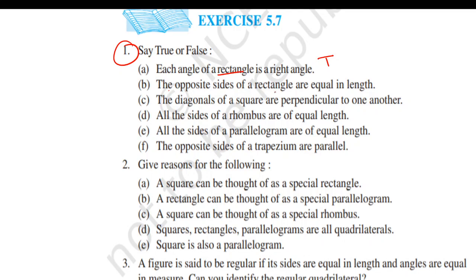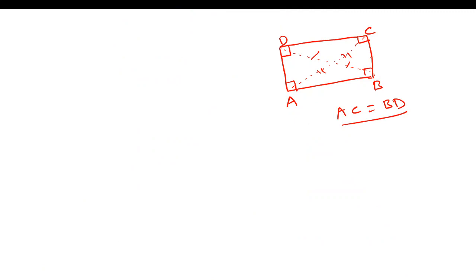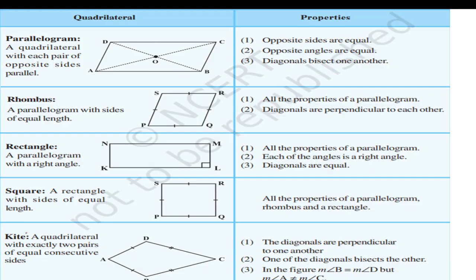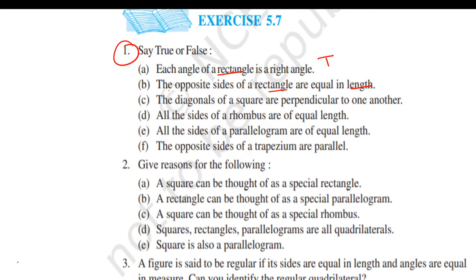Part B: the opposite sides of a rectangle are equal in length. You can see from this figure that one side is the breadth and the other is the length, so the opposite sides will be equal. The B part will also be TRUE.